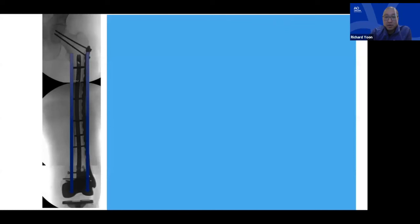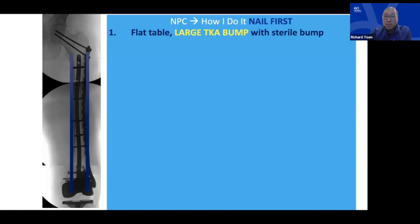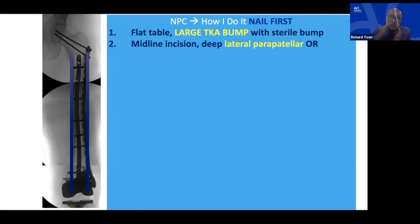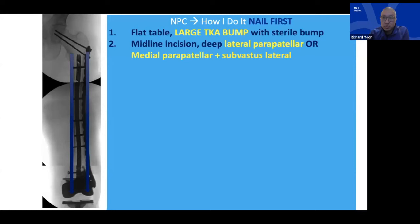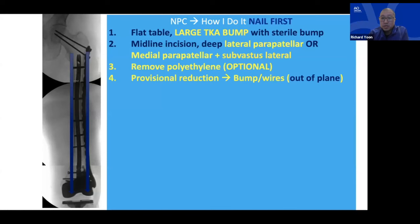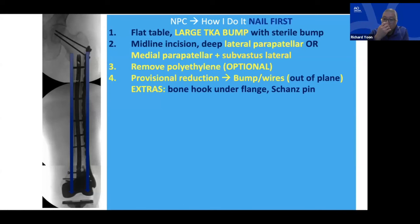I've moved away from large triangles and instead use a double-size towel bump similar to a total knee bump. I use a midline incision, especially with a prior knee replacement history, going through the same skin incision. It's dealer's choice whether you need medial or lateral parapatellar access — very versatile. For CR knees with a very posterior trochlear box, I won't hesitate to remove the polyethylene to get the correct start point wire. I go trans-tendinous rather than moving the patella to avoid the extensor mechanism deforming my starting point.